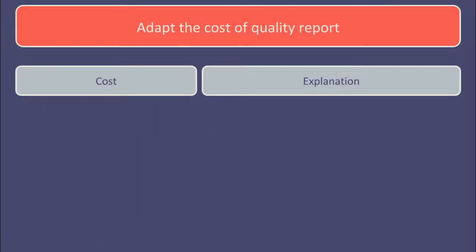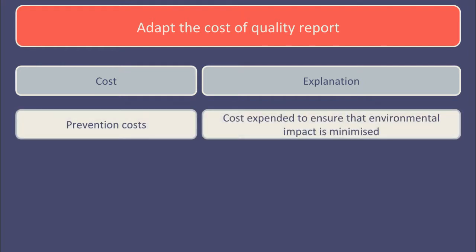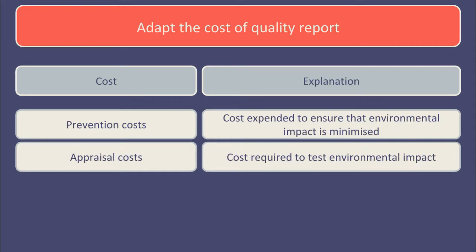One key piece of information that the strategic management accountant can produce to help identify environmental costs is to adapt the cost of quality report headings for use in an environmental sense. Prevention costs is money, time and effort expended to ensure that environmental impact is minimized — for example designing a production process that minimizes the use of energy and water. Appraisal costs include the money, time and effort required to test environmental impact — for example testing samples of waste water or carbon-based emissions to ensure they are within the legal limits and within the company policy limits.